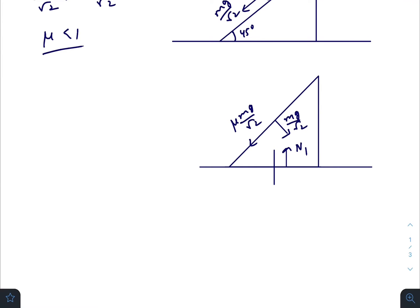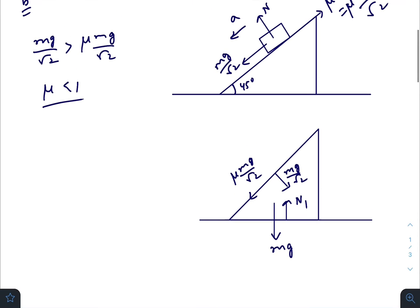Its own weight is mg, and the tendency of the inclined plane is to slide towards the right, so the frictional force due to the ground is acting towards the left. Let that be f1.